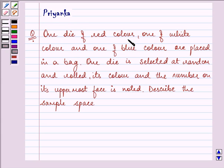It says, one die of red color, one of white color, and one of blue color are placed in a bag. One die is selected at random and rolled. Its color and the number on its uppermost face is noted. Describe the sample space.